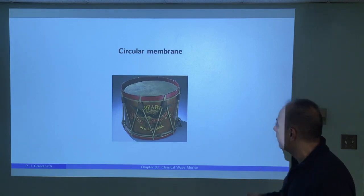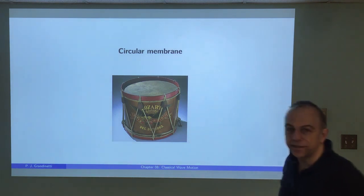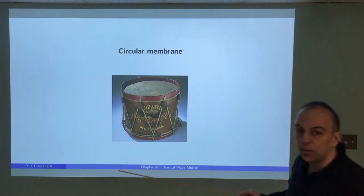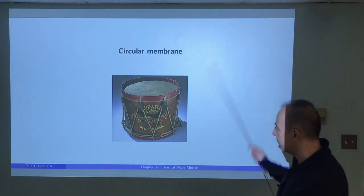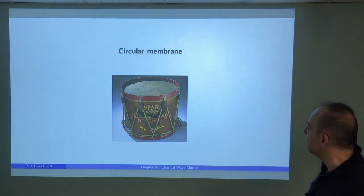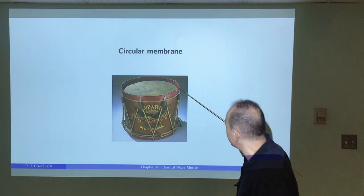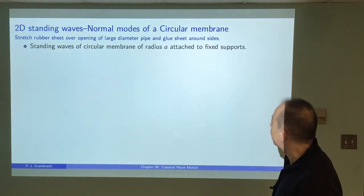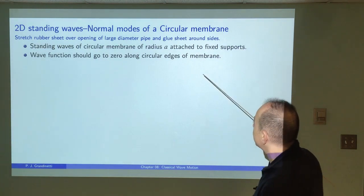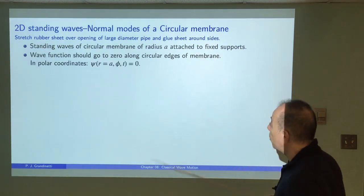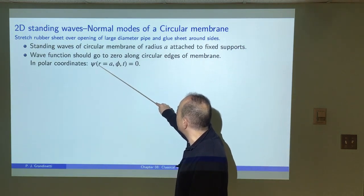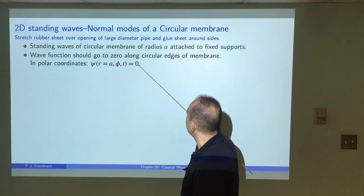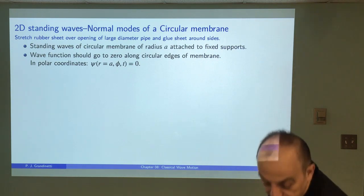Now let's look at a problem in 2D where polar coordinates are more appropriate. Imagine a drum — you hit it with a drumstick and set some wave motion into play. We want to know what are the normal modes on this drum head, and how we can describe any wave as a linear combination of those normal modes. We have a circular membrane with radius a attached to fixed supports, so the wave function must go to zero at the edges. In polar coordinates, that constraint says the wave function at r = a is zero for all values of phi and time.